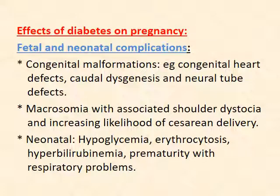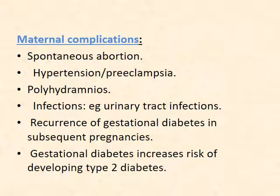Effects of diabetes on pregnancy — fetal and neonatal complications include congenital malformations such as congenital heart defects, caudal regression, and neural tube defects. Macrosomia (large baby) is associated with shoulder dystocia and increased rate of caesarean section. Neonatal complications include hypoglycemia, erythrocytosis, hyperbilirubinemia, and prematurity with respiratory problems. Maternal complications include spontaneous abortion, stillbirth, hypertension, preeclampsia, urinary tract infections, and recurrence of gestational diabetes in subsequent pregnancies. Gestational diabetes also increases the risk of developing type 2 diabetes later.